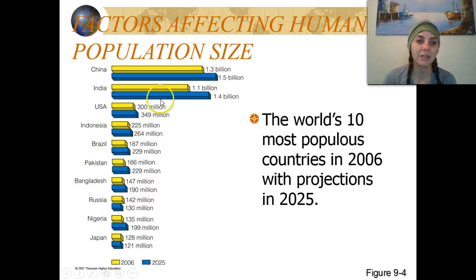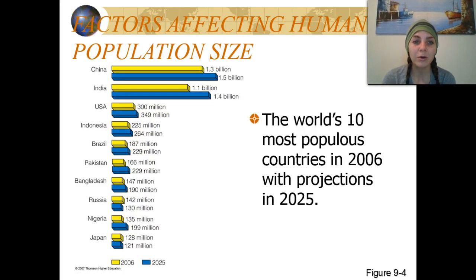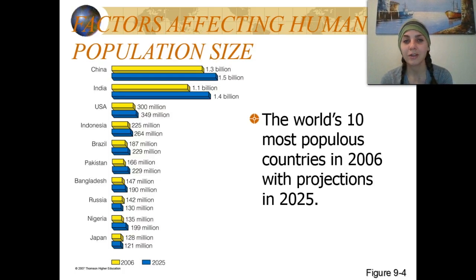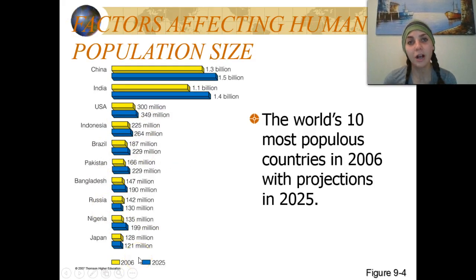The United States has a population of 300 million currently, and we're expecting that by the year 2025, we're going to have around 349 to 350 million people. You can go ahead and read the rest of these by yourself to get an idea of the different populations in the different countries around the world.